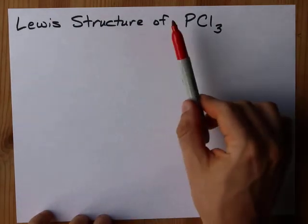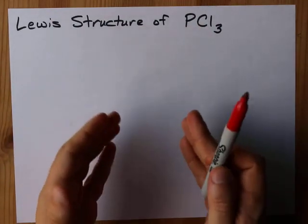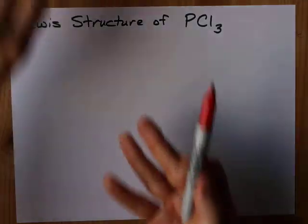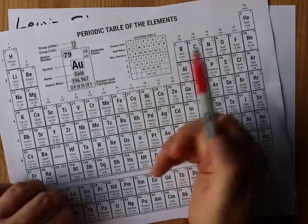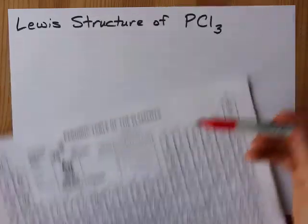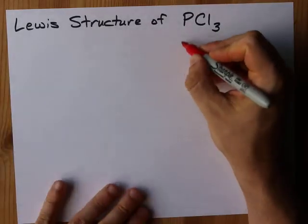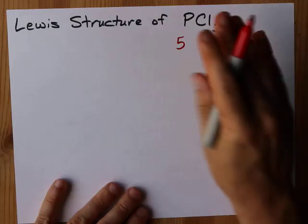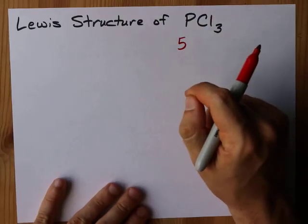Let's draw the Lewis structure of phosphorus trichloride, PCl3. We're going to need to know how many valence electrons are brought. Phosphorus is in group 15, same as nitrogen, and brings 5 valence electrons.